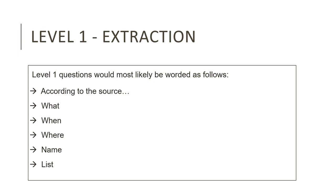All you need to do is look out for questions that start with the following words: 'According to the source,' 'what,' 'when,' 'where,' 'name,' 'list.' Questions that start with these words are most likely to be Level 1 questions.